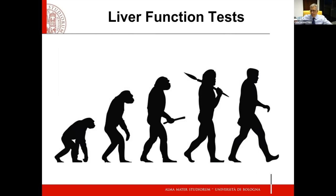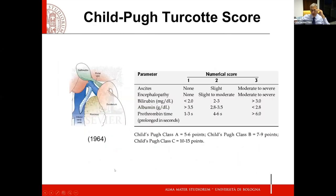C'è stata un'evoluzione nel tempo di ciò che consideriamo efficace nello screenare questi pazienti. Lo score di Child, che ha un'origine antichissima, prevede le famose tre classi in cui dividiamo i pazienti. Il fatto di dover valutare in questa categorizzazione anche variabili non facilmente oggettivabili, come il grado di encefalopatia, lo rende meno preciso. Sappiamo che i pazienti che possono andare alla resezione nella grande maggioranza dei casi sono in Child A, tuttavia anche pazienti con iniziali classi di Child B possono essere considerati.